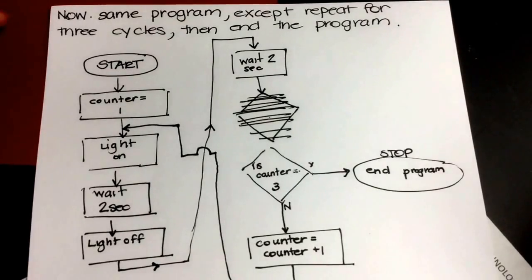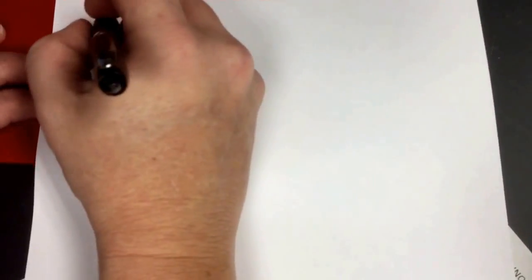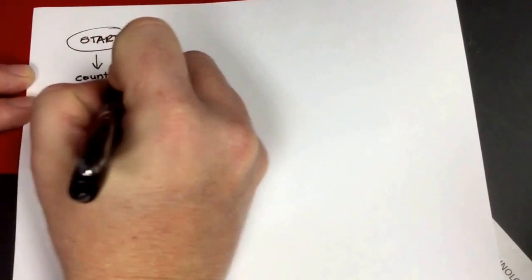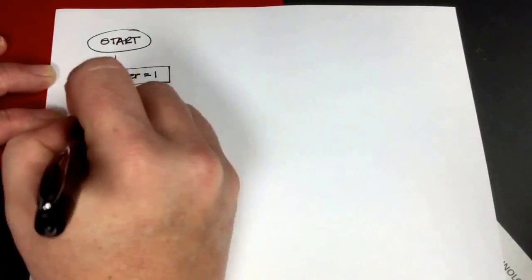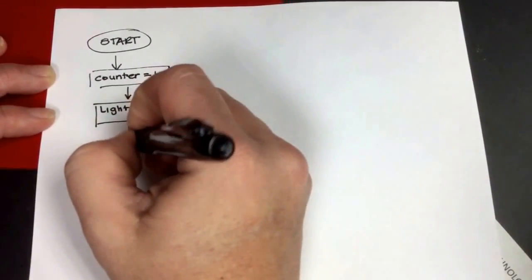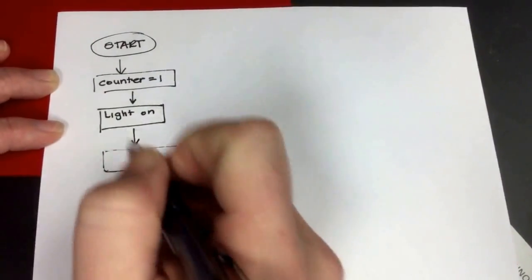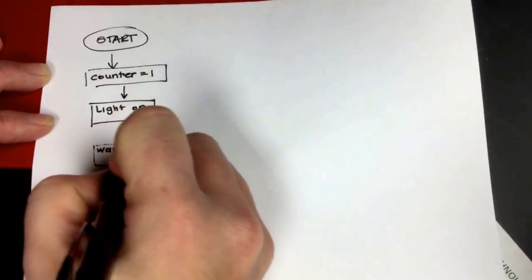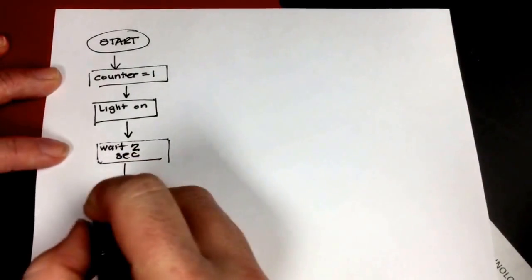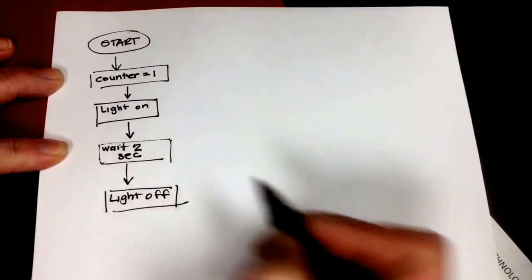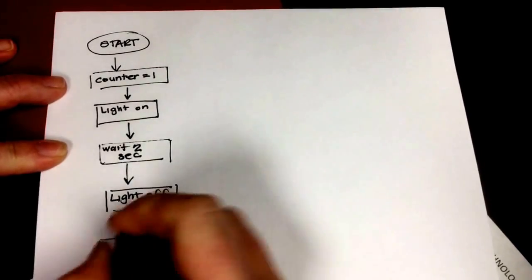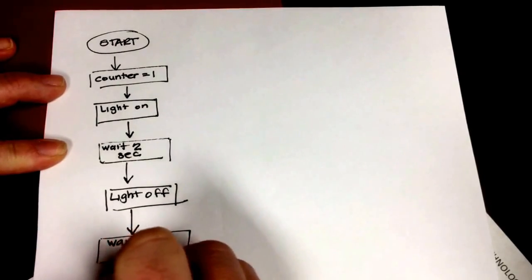So I hope that helps you. Let's look at how we could have done that a different way. So if we had done it the other way where the decision block hadn't been there first. If I just started with start, counter equals one, then light on, then wait two seconds, then light off, then another wait two seconds.